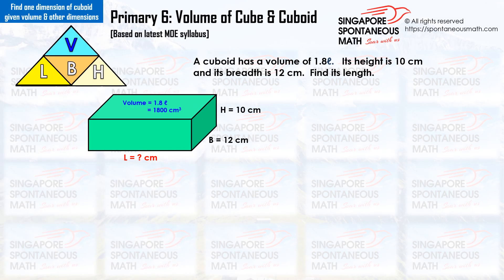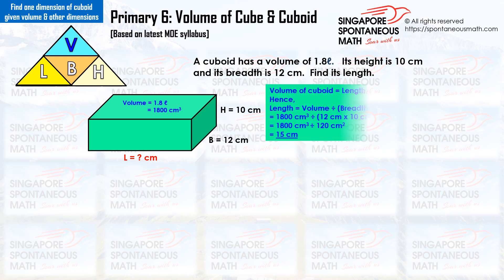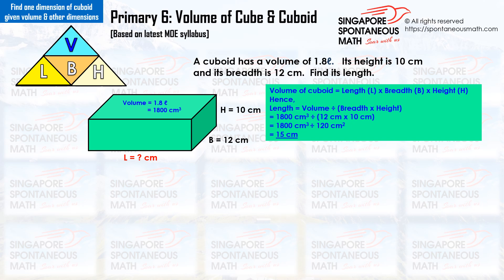A cuboid has a volume of 1.8 liters. Its height is 10 cm and its breadth is 12 cm. Find its length. To convert liters to cubic centimeters, we multiply by 1000. 1.8 times 1000 equals 1800, so 1.8 liters equals 1800 cm³.